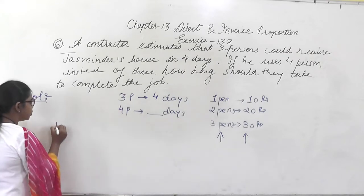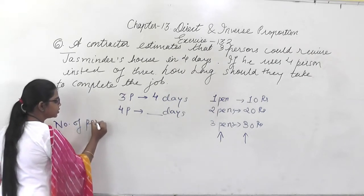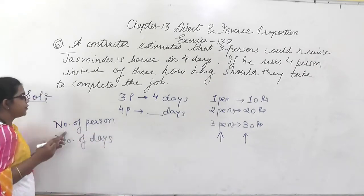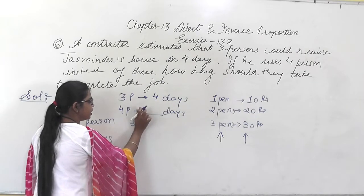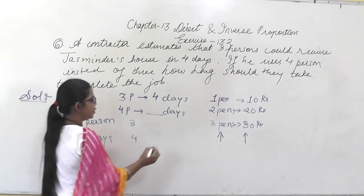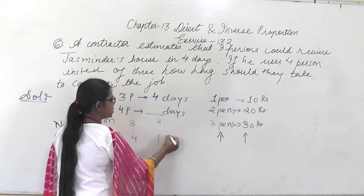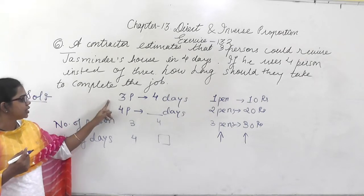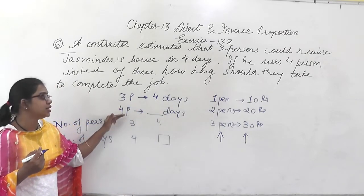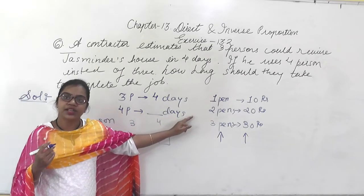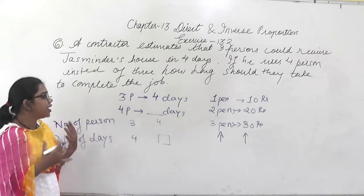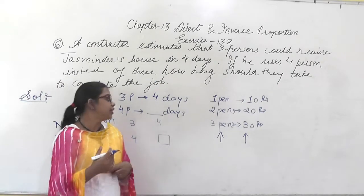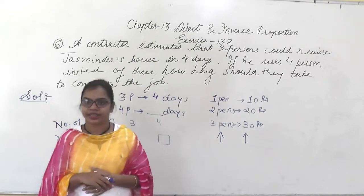What is given to us is number of persons and number of days. If the number of persons is 3, it will complete in 4 days. If the number of persons is 4, it will complete in how many days? Think about it — if more people are doing any work, they will complete it in less time. And if fewer people are there, they will complete it in more time.